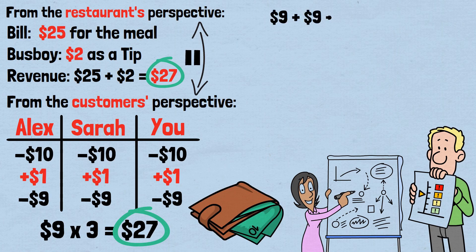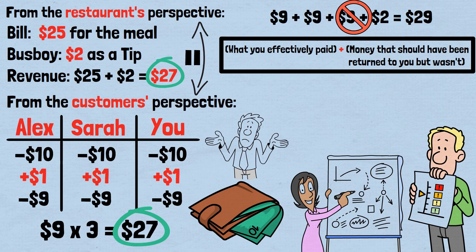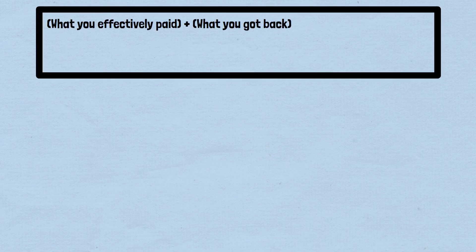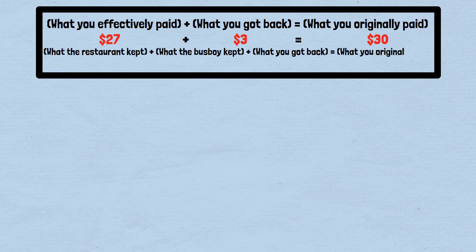The equation 9 plus 9 plus 9 plus 2 equals $29 is simply the wrong equation — it's asking the wrong question entirely. What the riddle is actually calculating is what you effectively paid, plus money that should have been returned to you but wasn't. This is a meaningless calculation. It's like asking: what's your salary plus the money you didn't spend on groceries? The correct equation should be: what you effectively paid plus what you got back equals what you originally paid — $27 plus $3 equals $30. Or: $25 plus $2 plus $3 equals $30.